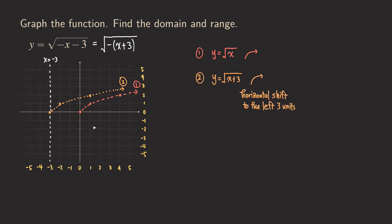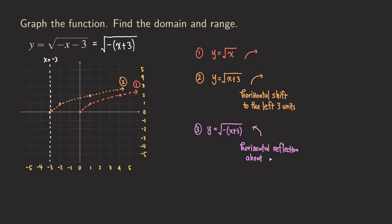When we apply the reflection, we have y equals square root of negative x plus 3. So now we reflect the graph, and the shape looks like this. This is a horizontal reflection, not about the y-axis anymore, but about the line x equals negative 3.